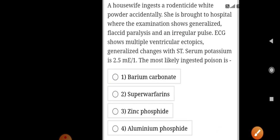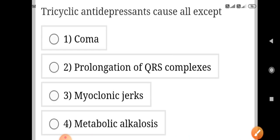Tricyclic antidepressants cause all except? It causes coma, prolongation of QRS complex, myoclonic jerks but does not cause metabolic alkalosis.